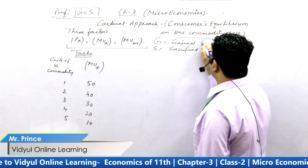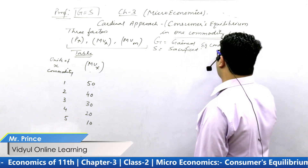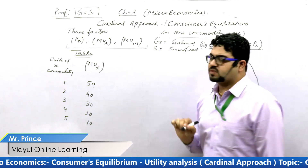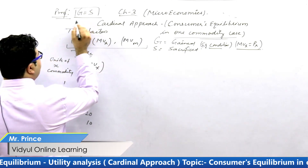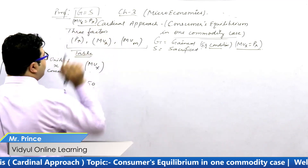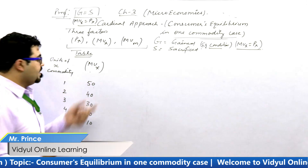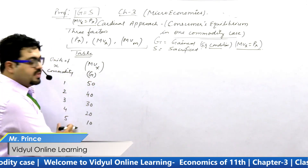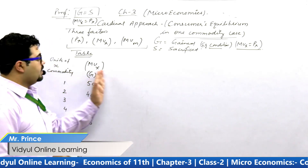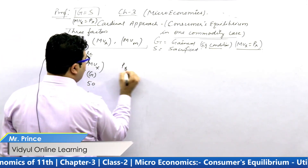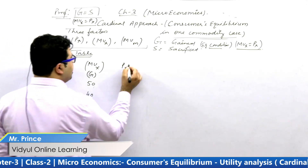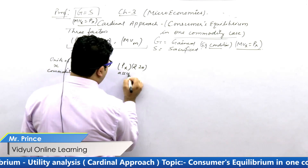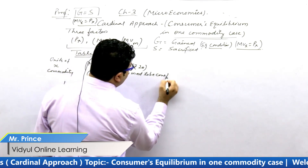Now the equilibrium condition for one commodity case is: MUx is equal to Px — marginal utility of X commodity equals the price of X commodity. Here, G stands for gaining (the utility gained) and S stands for sacrificed (the price paid). The third column is Px — price of X commodity — which we assume to be constant at rupees 20. So the consumer pays 20 rupees per unit of X commodity for every unit consumed.